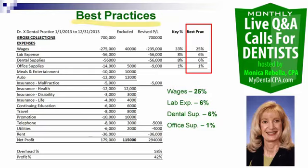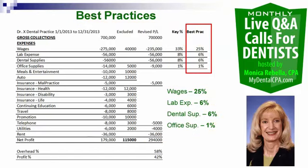Slide six gives us best practices. We know Dr. X's revised overhead and profit — now we compare to best practices. Wages should be closer to 25%, not 33% — that's an 8% gap. Lab and dental supplies should be at 6%, and I'm actually seeing a lot of people in the fives. Office supplies are about where they could be. So we have 8% we could trim in wages and 2% each in dental supplies and lab expense that we could trim to provide more to the doctor.